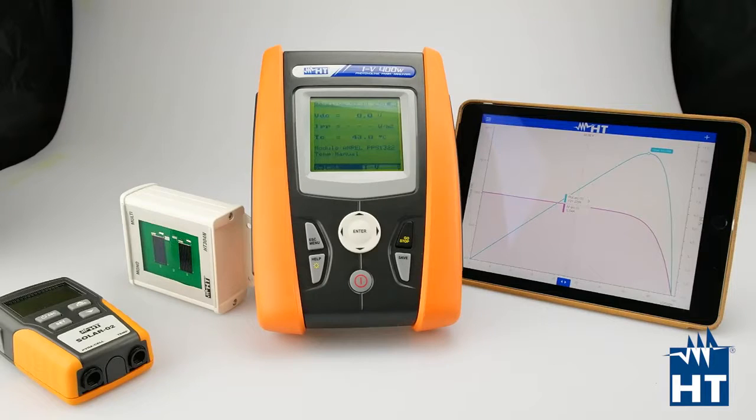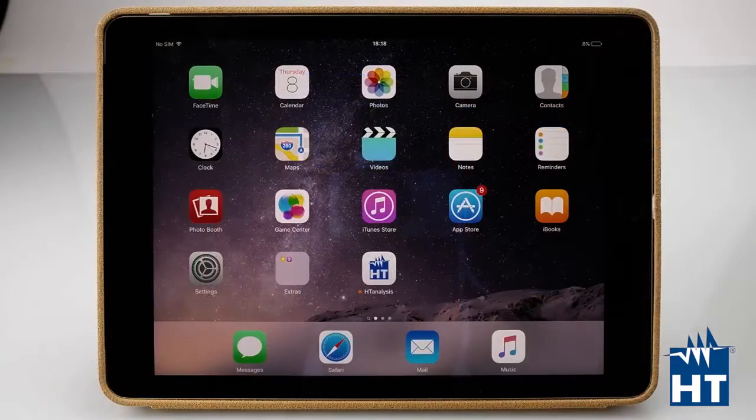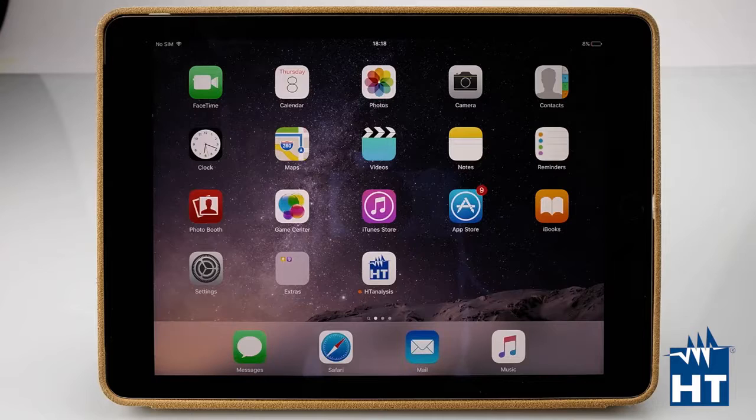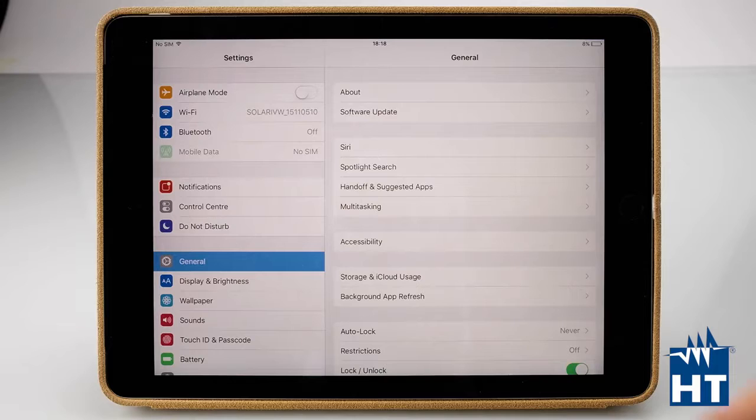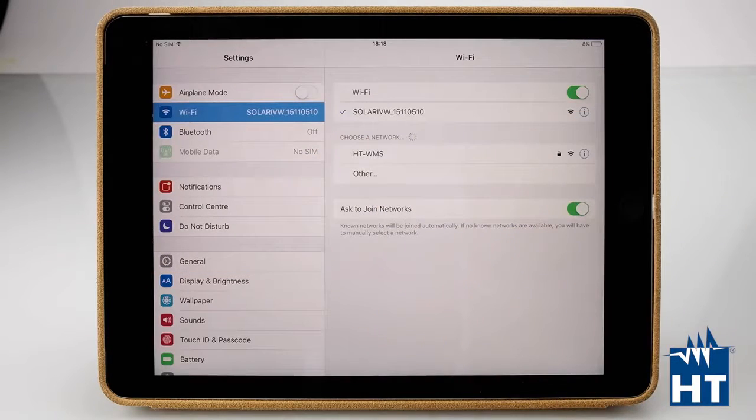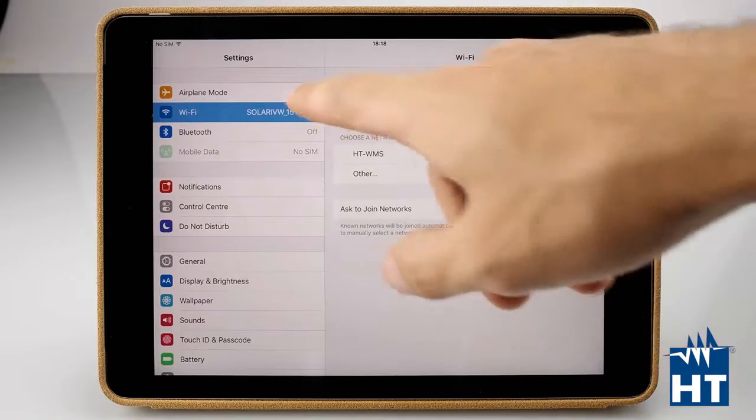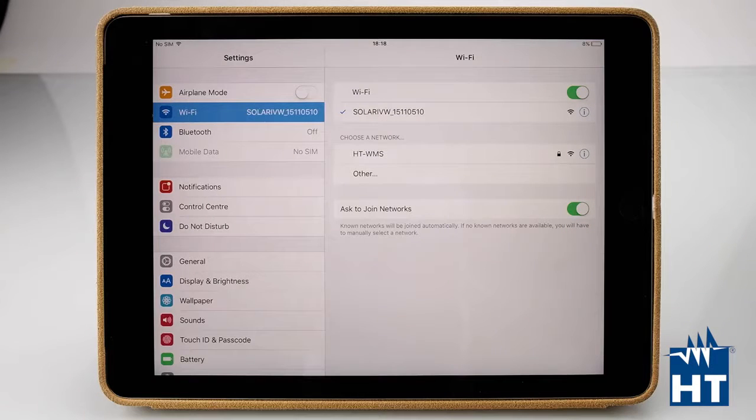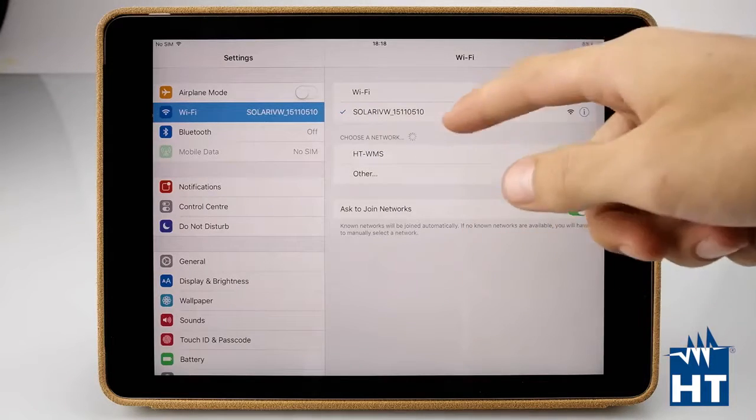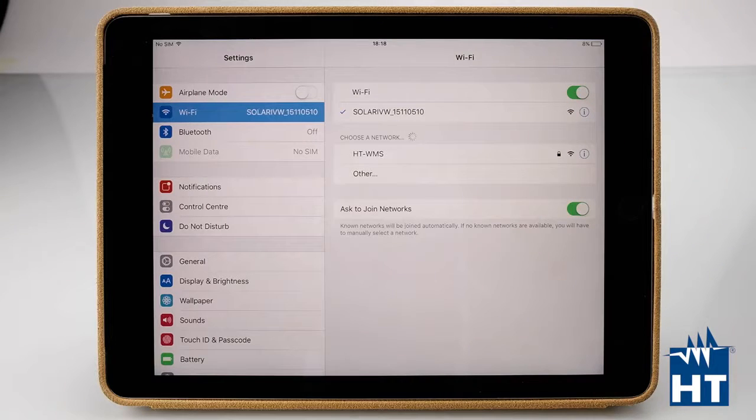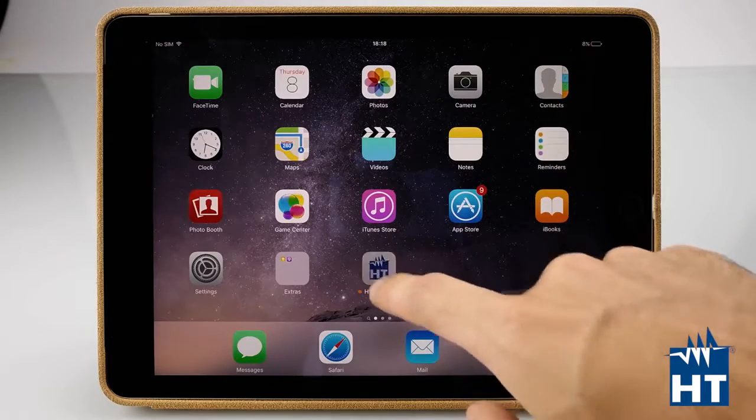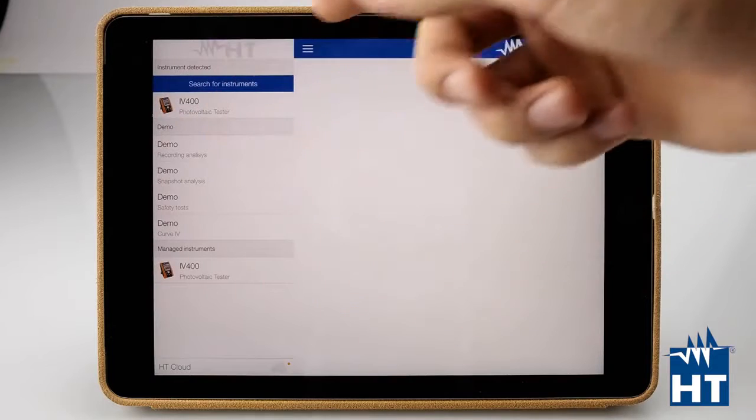Now I'm going to show you how the HT Analysis app works. First of all, let's connect the IV400W directly to our iPad through Wi-Fi connection. In Wi-Fi connections in the iPad menu, we can find Solar IV here as a standard Wi-Fi connection. We just press here as a normal Wi-Fi connection. After the connection is done, we can go directly into HT Analysis.